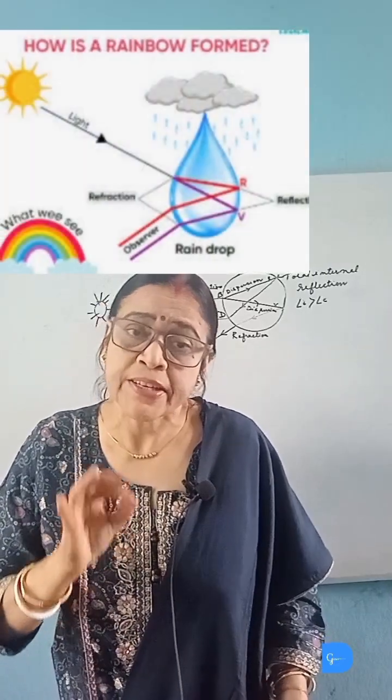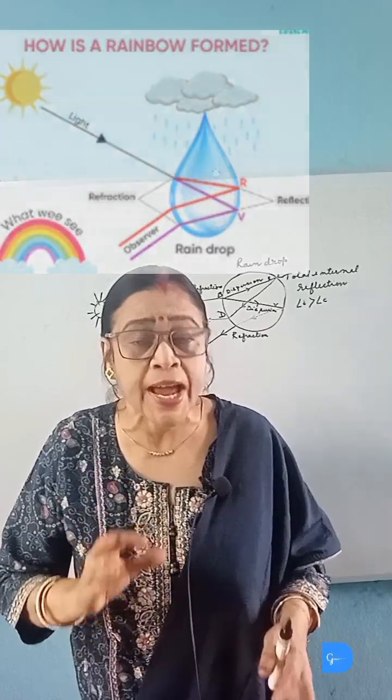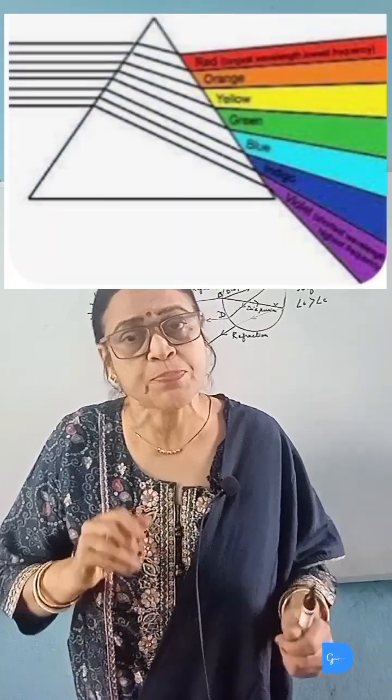Here, raindrop acts as a tiny prism, splitting the light into a spectrum by dispersion.